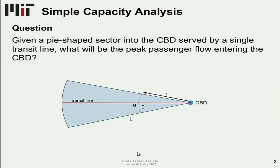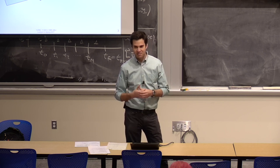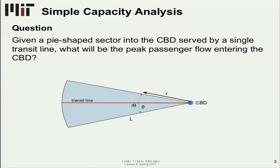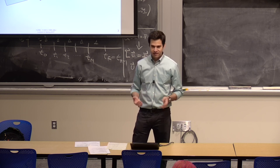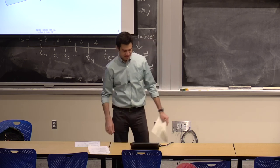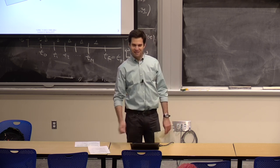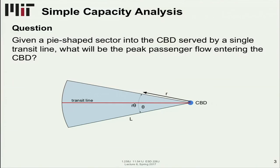Let's start with that simple capacity analysis. This is a theoretical exercise, but it gives you some idea of how one might approach estimating what capacity you need for some service. The problem is, given a pie-shaped sector into the central business district served by a single transit line, what will be the peak passenger flow entering the central business district? That might give you an idea of what mode you need - can you run a bus system, do you need a light rail, a BRT, a heavy rail?